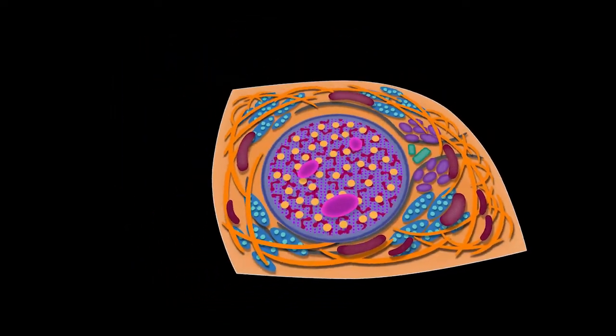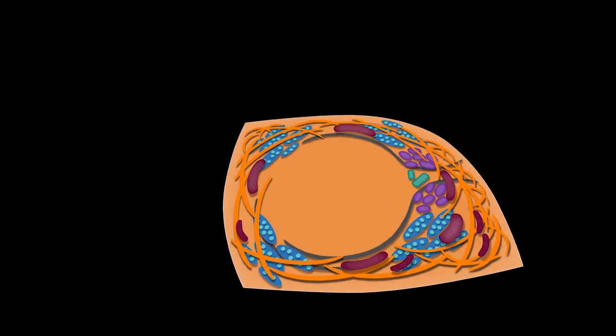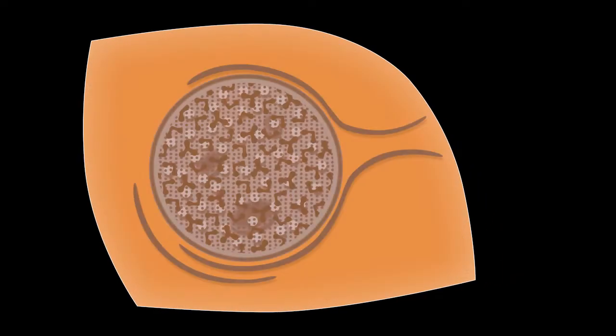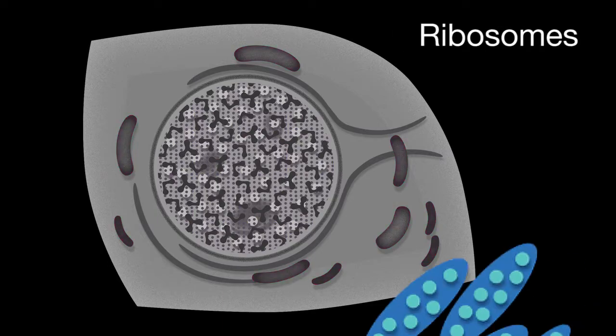Antibodies to some cytoplasmic components can also be detected when running IFA testing on HEP2 cells. Mitochondria will display coarse granular filamentous staining throughout the cytoplasm. Ribosomes display smooth to fine granular staining of the cytoplasm, and you may also see weak staining of the nucleoli.